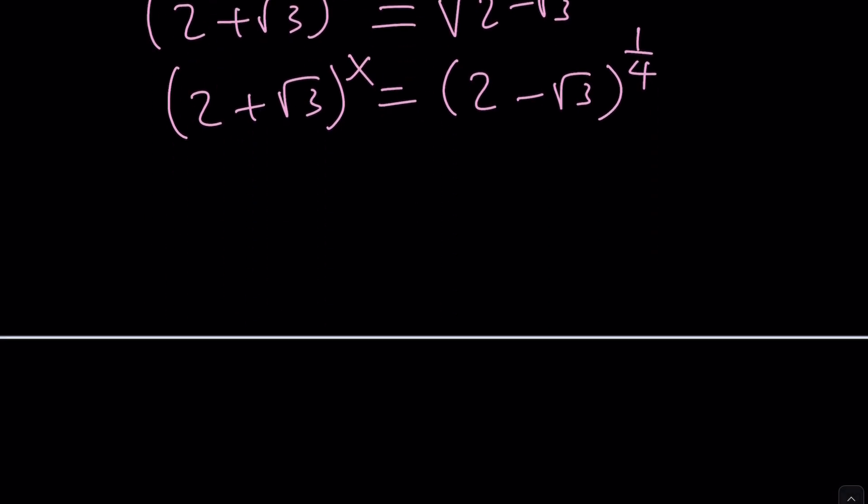So, we can write one of these in terms of the other. Which one would you like to go? I don't want to mess with the x part, so let's keep this as is, and mess with the right-hand side. Can we? We can write 2 minus root 3 as 1 over (2 plus root 3), because the product of those two things is 1. In other words, they are reciprocals. You get the idea? Cool, cool.